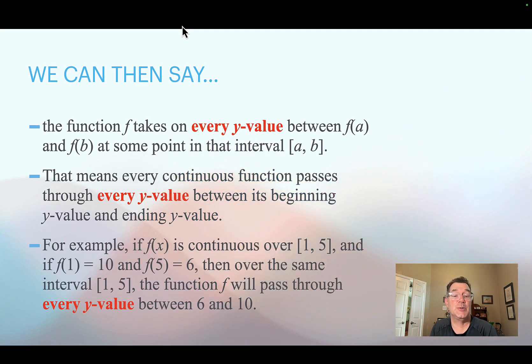For example, if I've got a continuous function f(x) and it's continuous from x equals 1 to x equals 5, and I know that the first y-value is 10 and the last y-value is 6, then somewhere between x equals 1 and x equals 5, we're going to hit every possible y-value between 10 and 6.